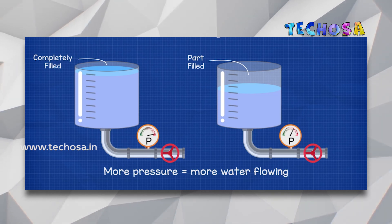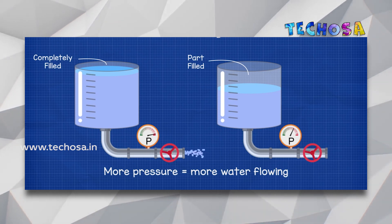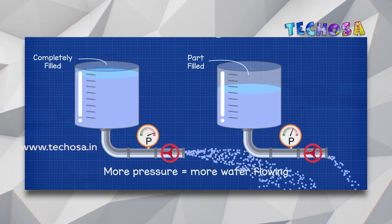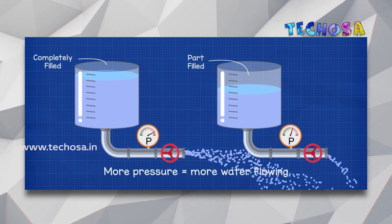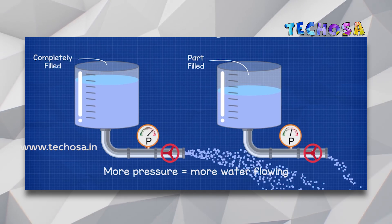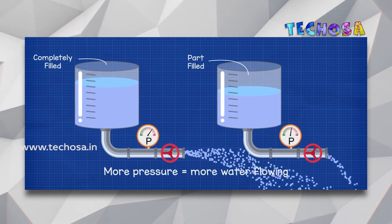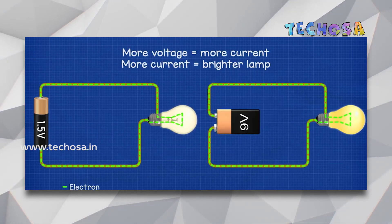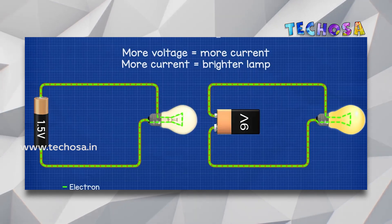Voltage comes from a power source or battery. The higher the voltage, the higher will be the flow of electrons and the brighter the bulb will glow. You can imagine voltage like the pressure in a water tank. If we have a full tank of water, then all the mass of the water will cause high pressure at the tap. Similarly, if the amount of water in the tank is less, then the pressure at the tap will be less. If the pressure is high, the water will flow strongly, and if the pressure is low, the water will have a weak flow, just like the flow of electrons.